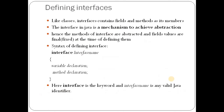Interface is the keyword. Like classes, an interface consists of interface members. There are two types: data fields, which represent the information part, and methods, which represent the behavior part. Through the definition of interface, we can achieve abstraction. The syntax of interface definition starts with keyword interface, then the name of the interface, followed by data fields and methods.